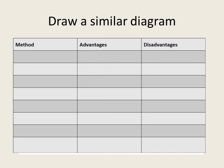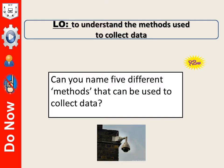What I'd like you to do is draw a simple diagram which has got method, advantages and disadvantages going across the top, with enough space underneath to write about 8 different sections. Today's learning is going to be to understand the methods used to collect data. The do now task is: can you name 5 different methods that can be used to collect data?